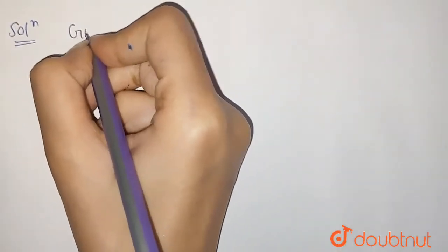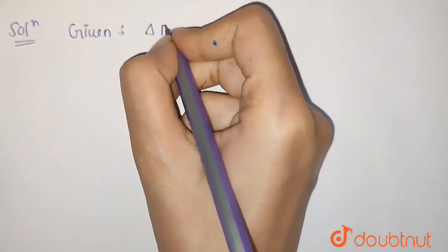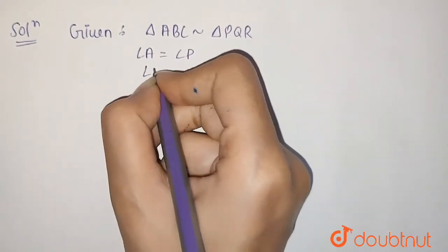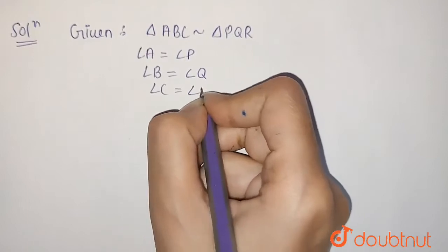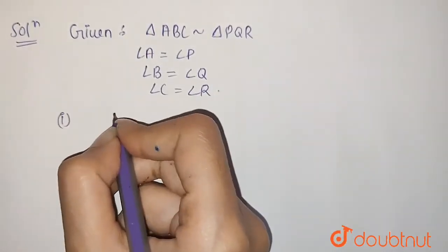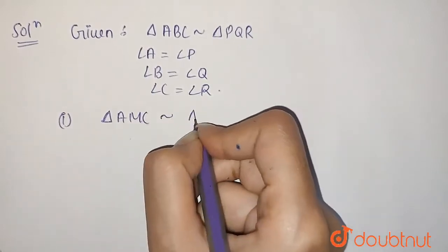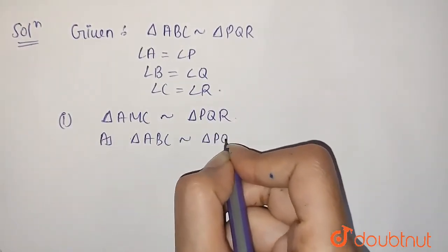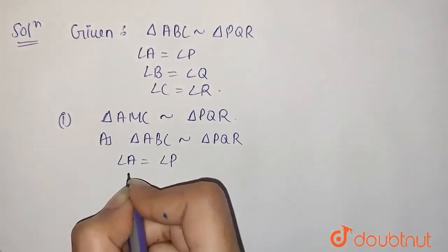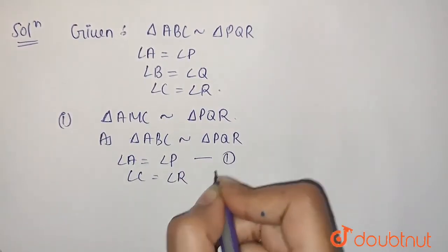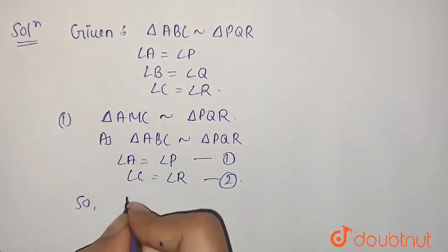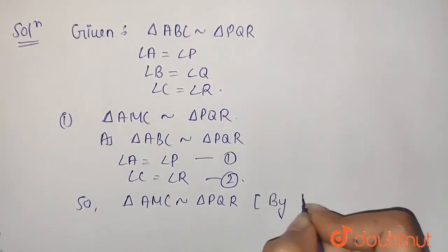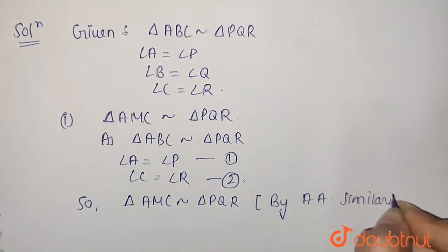Let's start. First of all, we'll write given: triangle ABC is similar to triangle PQR. With this, angle A is equal to angle P, angle B is equal to angle Q, and angle C is equal to angle R. First, we have to prove that triangle AMC is similar to triangle PNR. As triangle ABC is similar to triangle PQR, angle A is equal to angle P and angle C is equal to angle R. So, triangle AMC is similar to triangle PNR by Angle-Angle similarity rule.